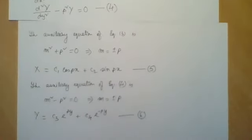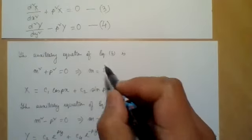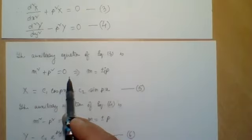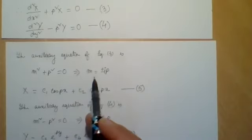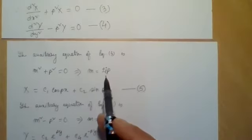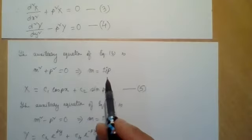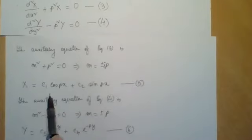A correction: for equation 3, m² = -p², so m = ±ip — the roots are imaginary. Because the roots are imaginary, the solution involves cosine and sine rather than exponentials.